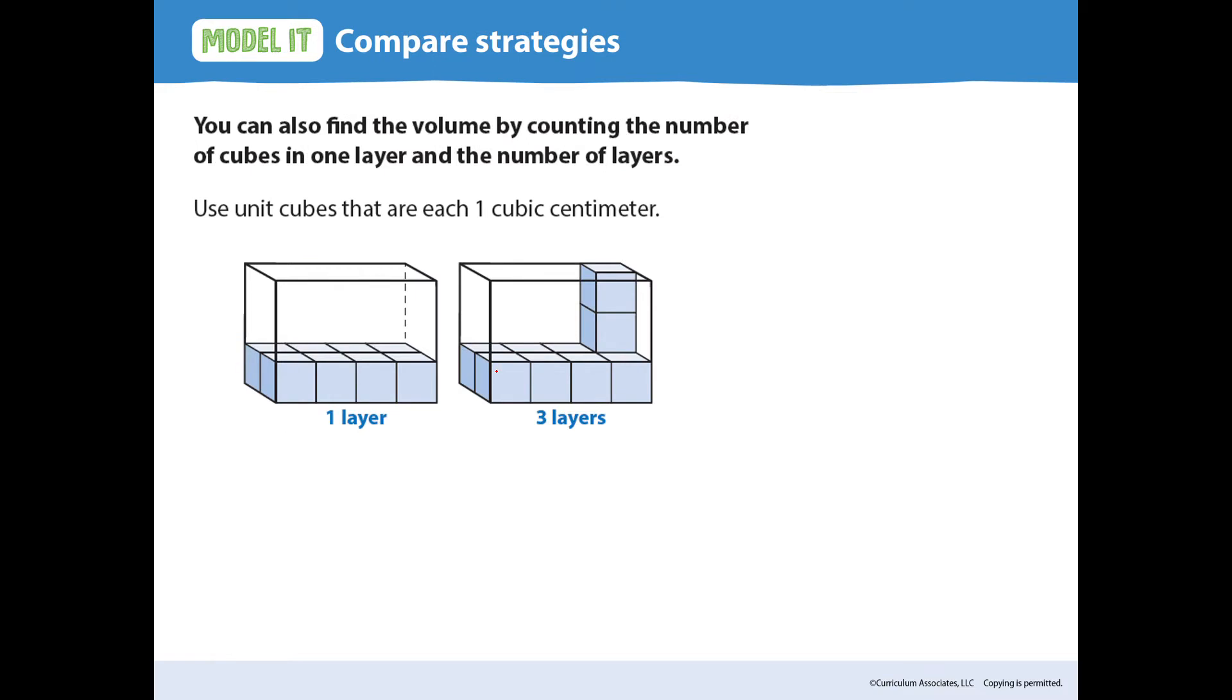You can also find the volume by counting the number of cubes in one layer and the number of layers. So in this layer, we can count 1, 2, 3, 4, 5, 6, 7, 8. So there's 8 cubes in each layer. And we can see that there's 1, 2, 3 layers. So we can multiply 8 times 3 to get 24 cubic centimeters.